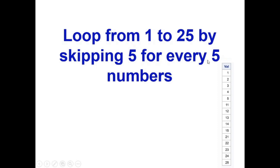Let us try to understand this by an example shown below. Here I have numbers from 1 to 25, but if you can see, after every 5 numbers I am skipping 5 numbers, and then again I am starting. After 5 more numbers I am skipping another 5 numbers.